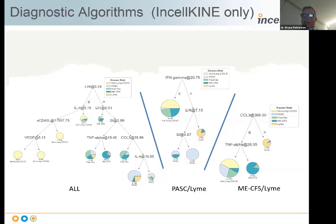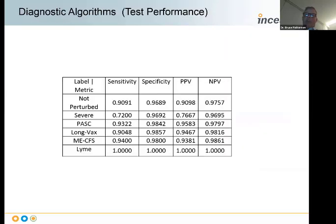In our latest iteration of these algorithms—a publication that should go out in the next two weeks—we looked at all the different chronic inflammatory conditions: long Vax, ME-CFS, long COVID, and Lyme, or at least chronic Lyme organisms, in a category we call 'not perturbed.'